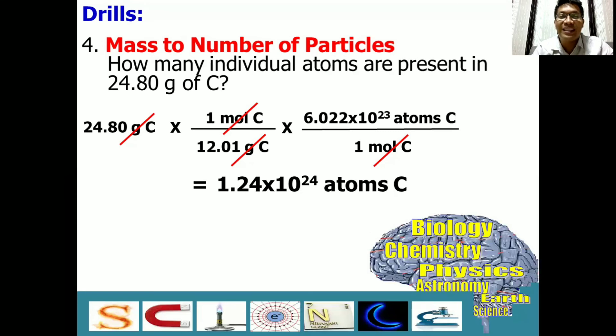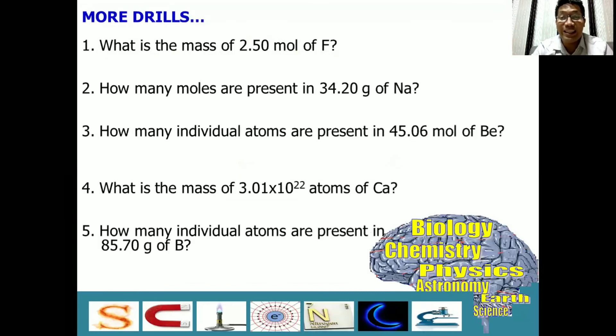I hope you were able to follow the process on conversion. Let's just remember that the basic skill here is elimination of units. So, you're always guided in your process. It's your turn. You may pause this video and try to answer the following drills. Let us now check your answers. So, number one. What is the mass of 2.5 mole of fluorine? The answer is 47.5 grams of fluorine.